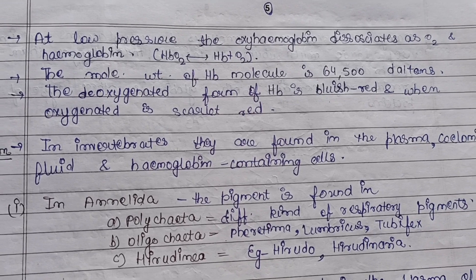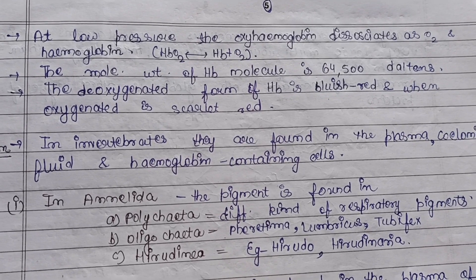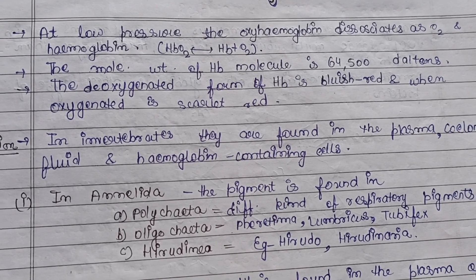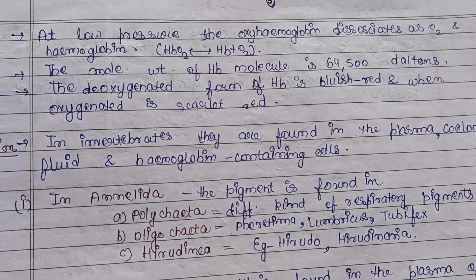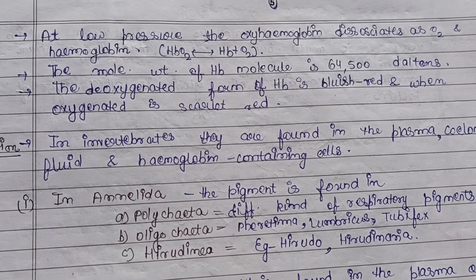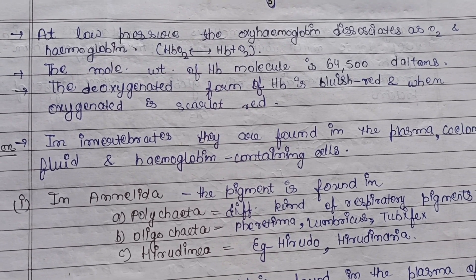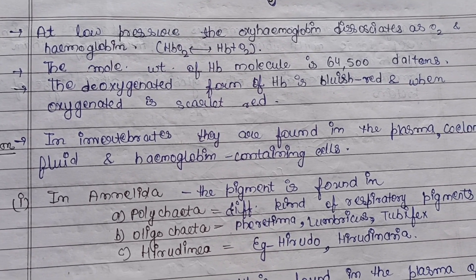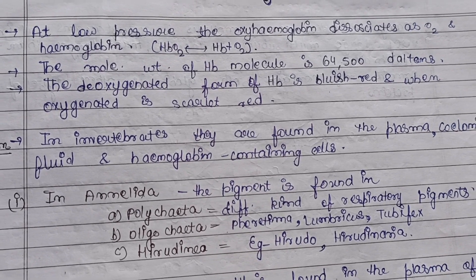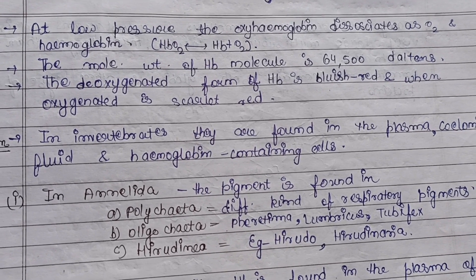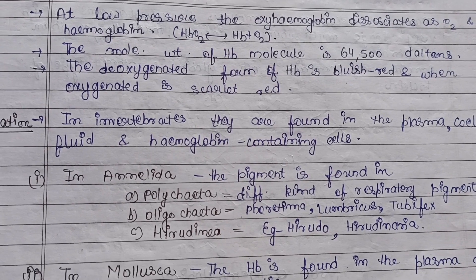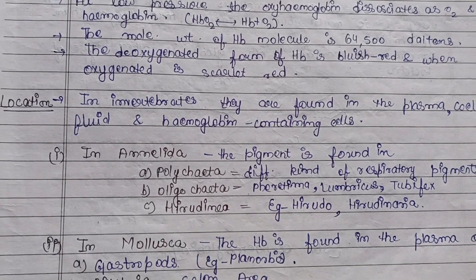The molecular weight of a hemoglobin molecule is 64,500 daltons. The deoxygenated form of hemoglobin is bluish-red in color, and when oxygenated it changes to scarlet red, as discussed earlier.